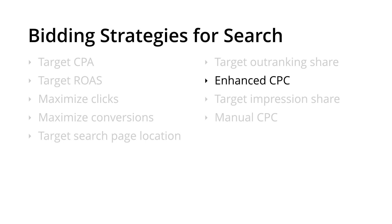We also have Enhanced CPC, which is quite similar to the Maximize Conversions bid strategy, but with Enhanced CPC you have the flexibility of setting individual bids at the ad group and individual keyword levels for your search campaigns. Target Impression Share is an automated bidding strategy which aims to show your ads at the very top of the paid search results, above the organic search results, or anywhere on the search results page. You select where you'd like your ads to show and then set an impression share target. For example, setting a target of 50% for the top of the results page will aim to show your ads for at least half of all available impressions in the top positions.